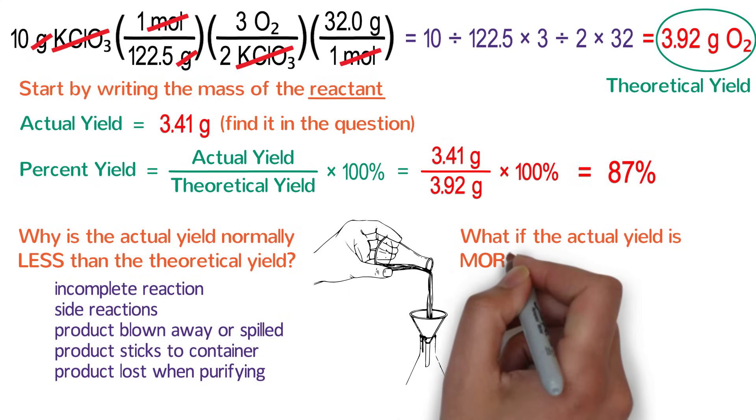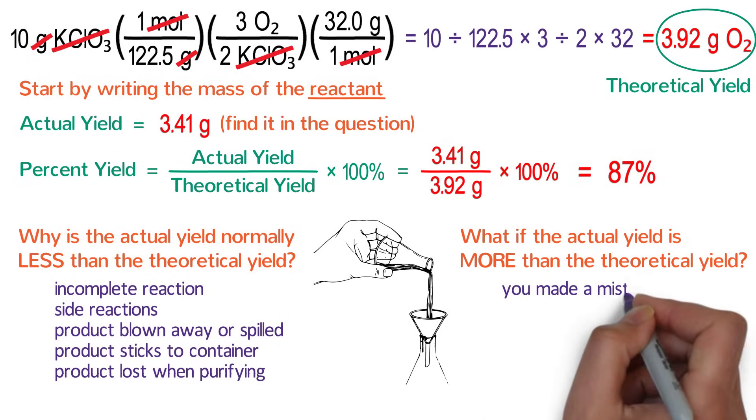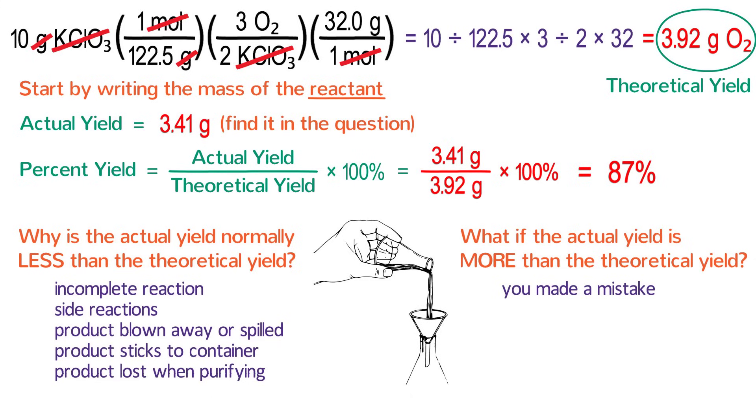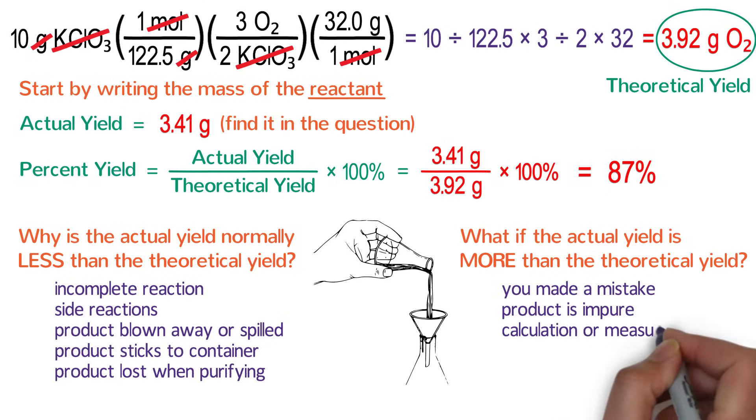But what if the actual yield is more than the theoretical yield? That is a much bigger problem because it means that you made a mistake. It is impossible to make more product than the theoretical yield. Often times this can seem to occur if the product is impure in which case you will need to purify it or dry it. Alternatively, if the yield appears to be greater than 100%, this may indicate a calculation or measurement error that you will need to go back and fix.